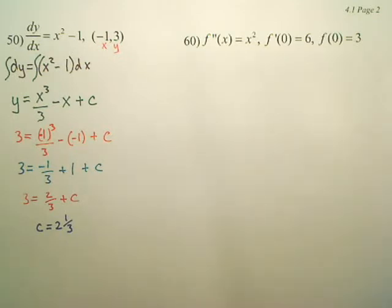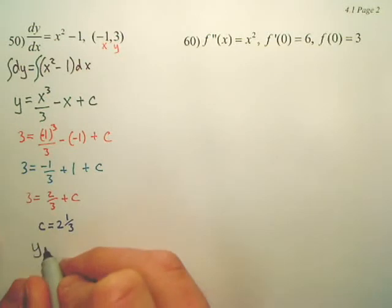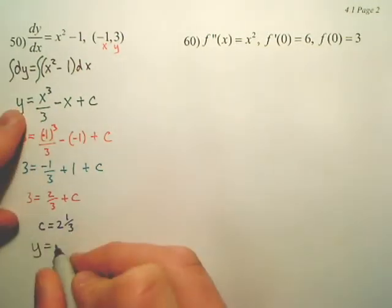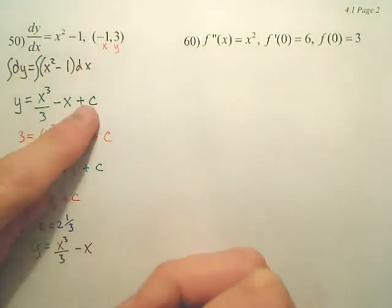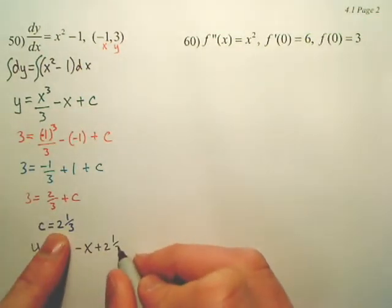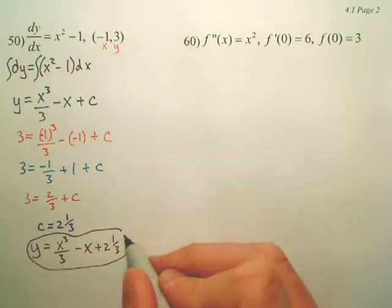What does that mean? Well, what's my original equation? My original equation would simply be this, x to the third over 3, minus x. But what's c? It's 2 and 1 third, or 7 thirds. That is my particular solution.